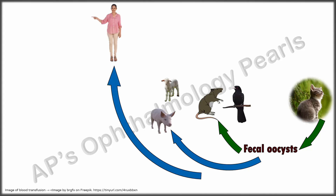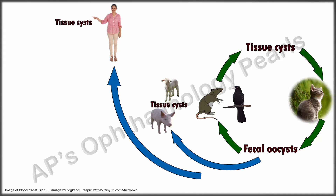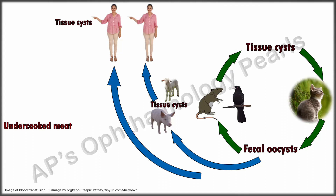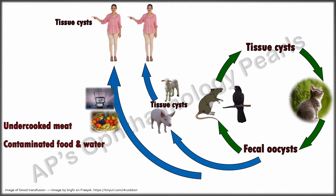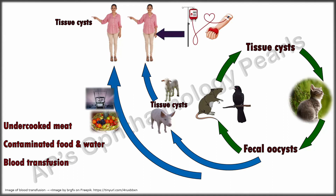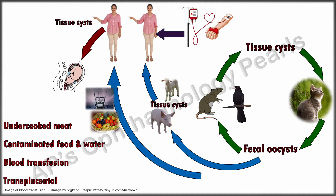After ingestion, sporozoites are released from the oocysts and transformed into tachyzoites, the active infectious form. Tachyzoites then go into the dormant phase as a result of the host immune system, forming bradyzoites that reside in tissue cysts. Humans can get infected by eating undercooked meat containing tissue cysts, consuming food or water contaminated with cat feces, or through blood transfusion or organ transplant.